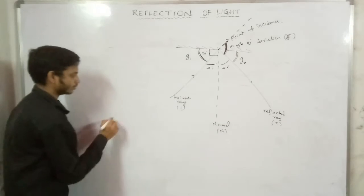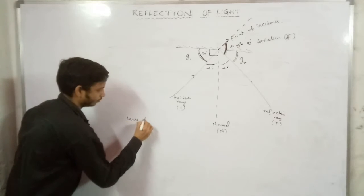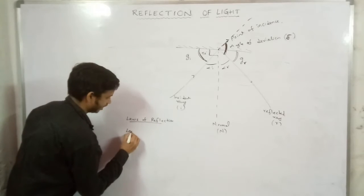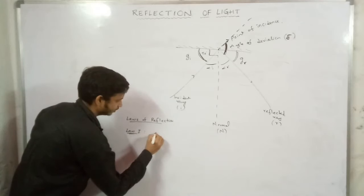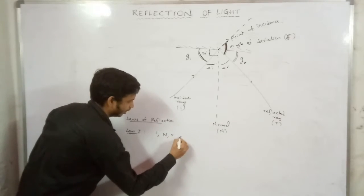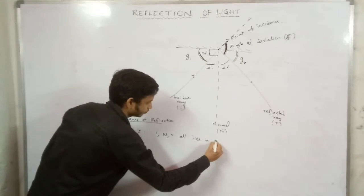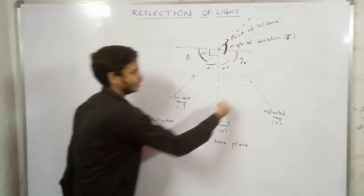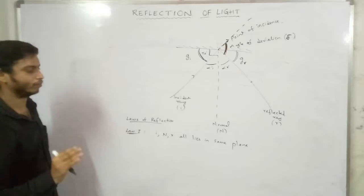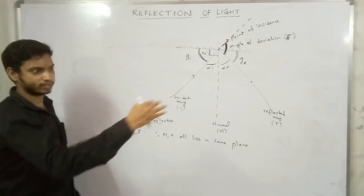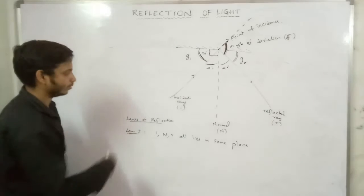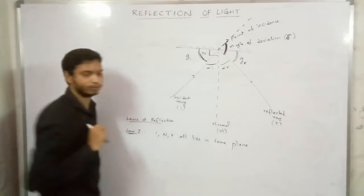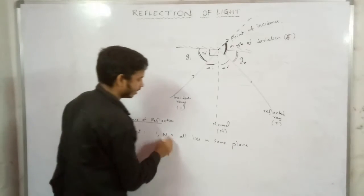Now, the two laws of reflection. First law: the incident ray, the normal, and the reflected ray all lie in the same plane. So there is one plane in which the incident ray, normal, and reflected ray all exist together.